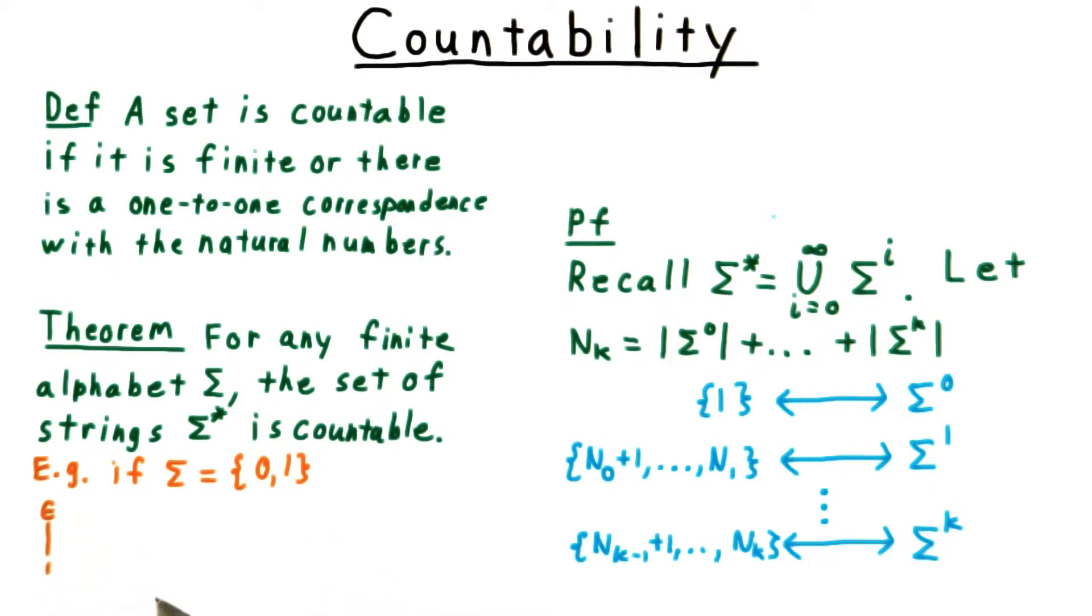First, we assign 1 to the empty string. Then we enumerate all strings of length 1, then those of length 2, and so forth. This is the main theorem that we will need here concerning countability.